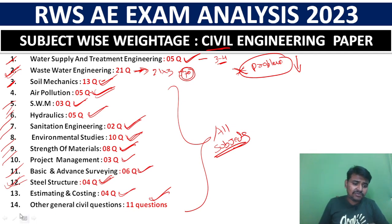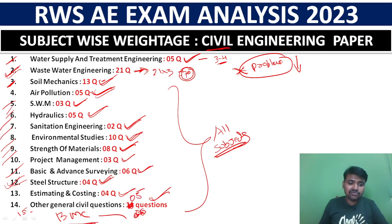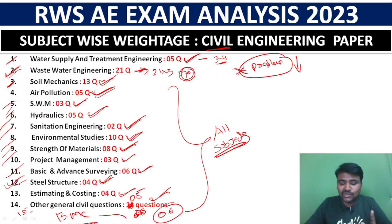Building materials and construction is another subject. It contributes around 1 to 2 questions. When you add these up, around 6 questions come from building materials and construction, contributing significant marks to the overall score.